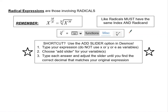The calculator tip for this packet is the add slider option in Desmos. We're going to have a problem where we are trying to simplify an expression, and we're going to type the expression in Desmos. There are three letters we cannot use: do not use X or Y because it will think you're trying to graph something, and do not use E because that's an irrational number. Any other letters will be fine. When you type an expression involving other letters, there'll be an option to add a slider, and we click that for each variable. Then we type in each answer choice and adjust the slider until we find the decimal that matches the original expression.